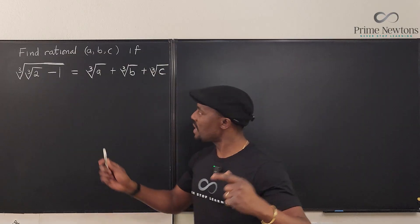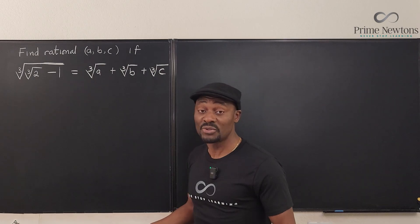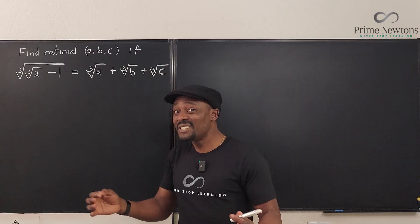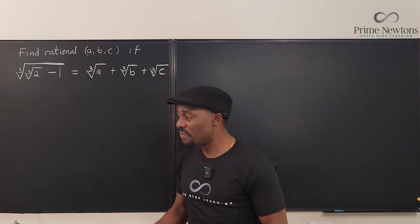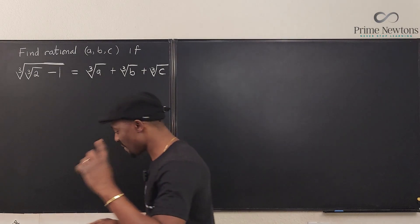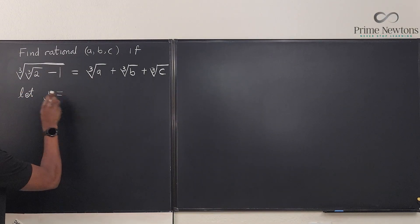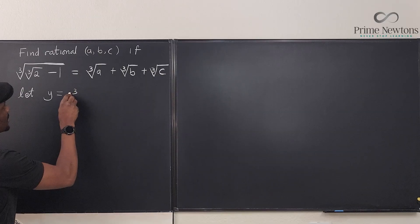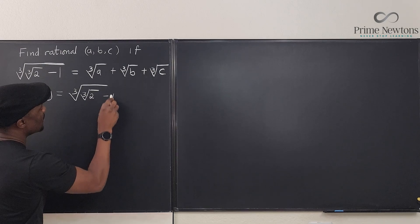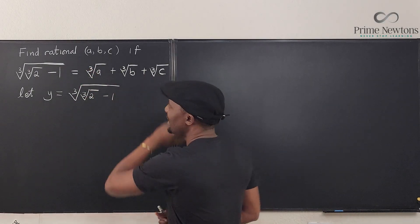I suspect that for you to be able to write an irrational expression as the sum of other irrational expressions, we have to introduce some algebra. Because this is a cube root expression, I would need to do some cubic expansion. So firstly, let's get some x and y into the picture. I'm going to say let y be equal to the cube root of the cube root of 2 minus 1. This is what I need to get at the end of the day.